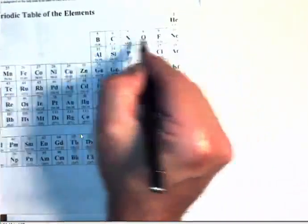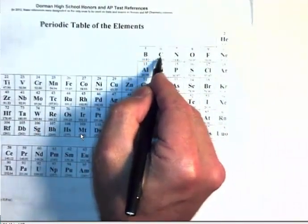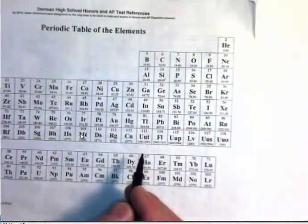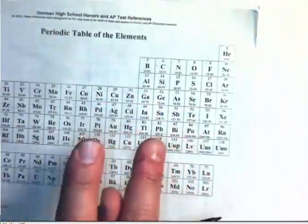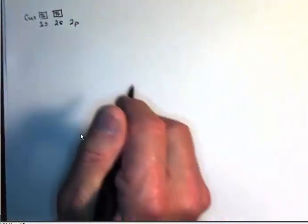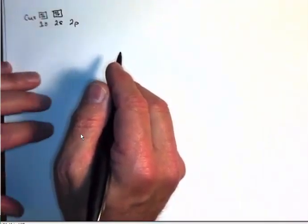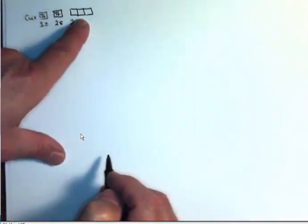Boron through neon is in the second row, so this is the 2p sub level. There are six elements across here, giving us six electrons maximum. The maximum is two electrons per orbital, so we need three orbitals for six electrons. Once we get to the p sub level region, we write out all three p orbitals — even if we don't yet have enough electrons to fill them, the orbitals are still there.